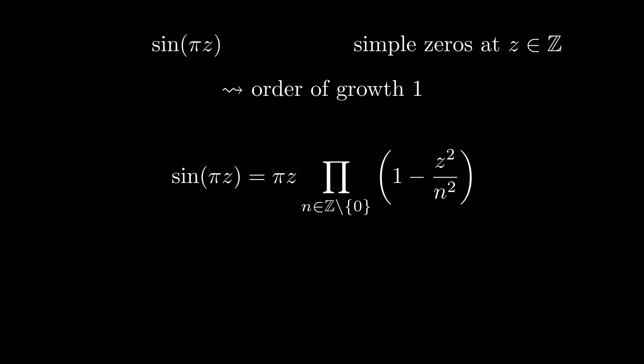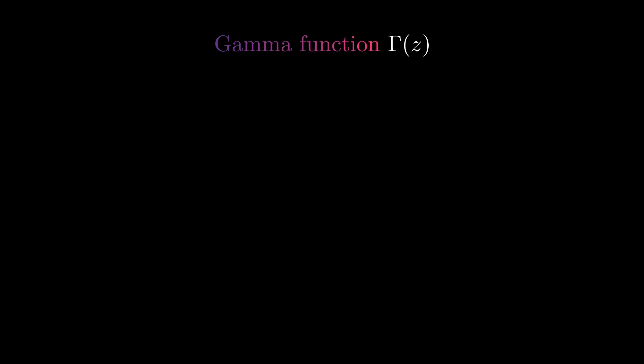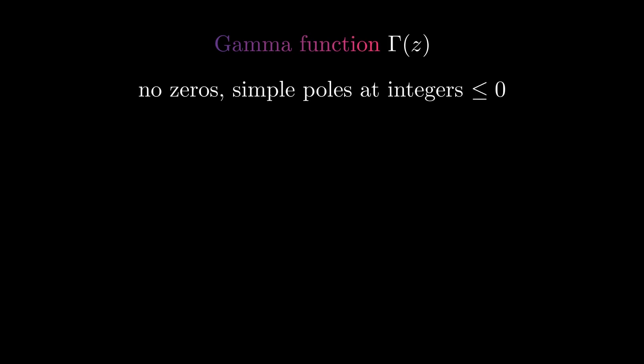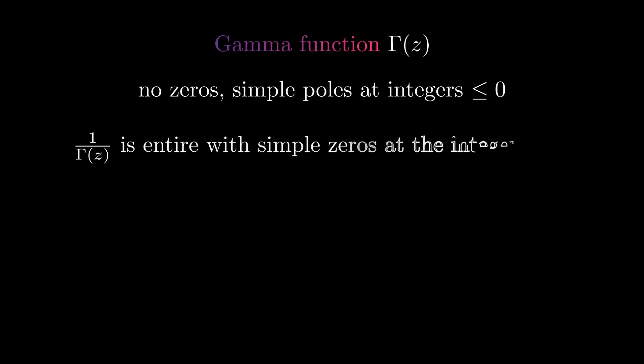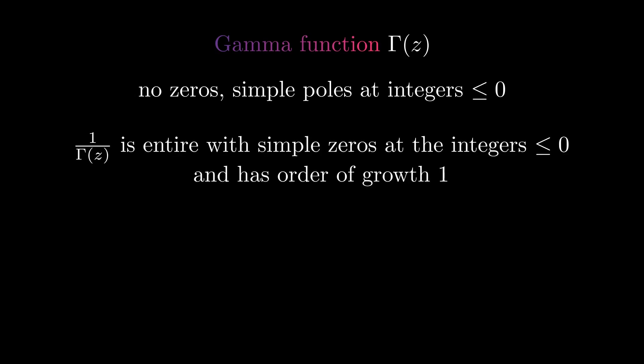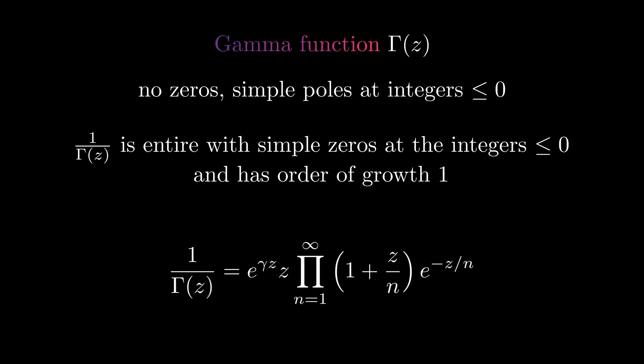Another example where we can apply our theorem is the gamma function. The gamma function has no zeros and simple poles at all integers less than or equal to zero. So if we take the reciprocal, we get an entire function which has zeros at the non-positive integers. This has order of growth 1. Therefore, we again get an infinite product formula.